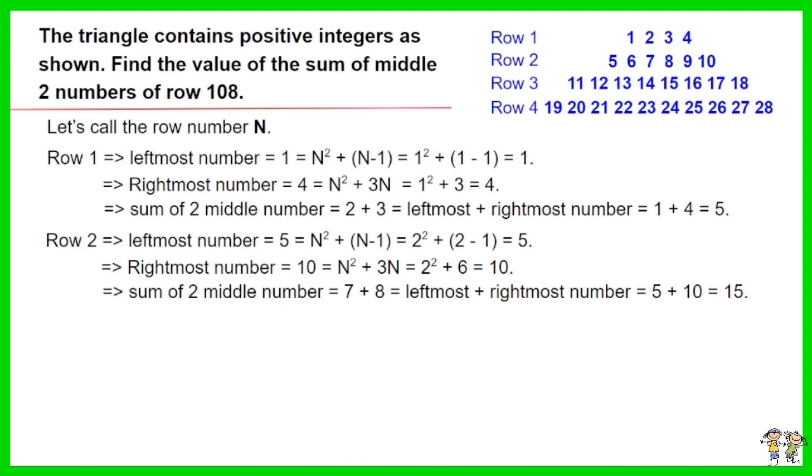The sum of the two middle numbers of row 2 equals 7 plus 8, equals leftmost plus rightmost number, which is 5 plus 10. The result is 15.